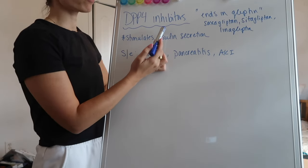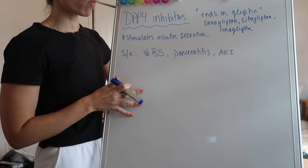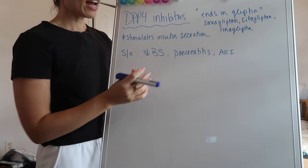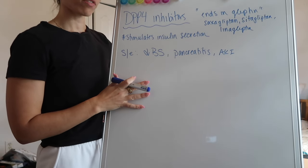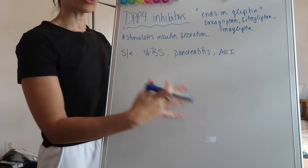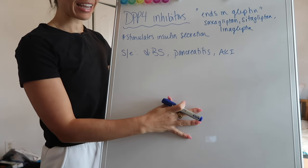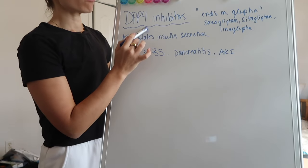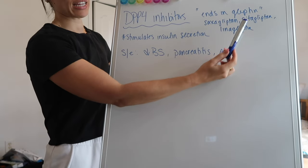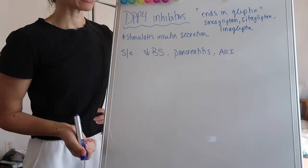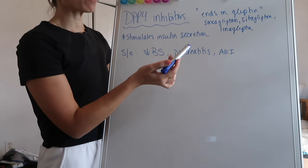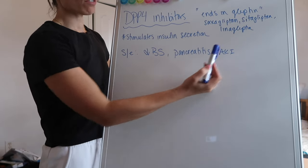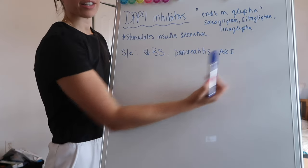The next drug class is DPP-4 inhibitors, which are very similar to your GLP-1s in that they also stimulate insulin secretion and have a lot of similar side effect profiles. When you're thinking about your DPP-4 inhibitors, they are going to end in '-gliptin.' So Sitagliptin, Saxagliptin, Linagliptin — some brand names you guys will probably recognize are Januvia and Tradjenta. It's really helpful if you can break them down by generic name. Really the same thing — they can decrease your blood sugar.